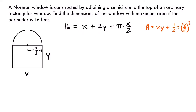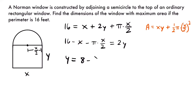Solving for y in the constraint, we subtract the other two terms to the other side: 16 minus x minus π·(x/2) equals 2y. Dividing both sides by 2 and simplifying, we get y = 8 − x/2 − π·x/4.